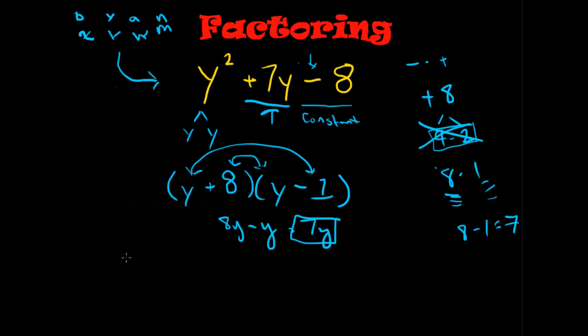So, check and see if you're right. First terms, y² outside -y inside +8y last 8 times -1 is -8. Combine like terms, 8y - y is 7y plus y². And this is identical to our original problem. So, this is the correct factored solution.